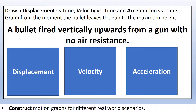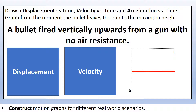Our first scenario is a gun firing a bullet vertically upwards with no air resistance. I always start by thinking about the acceleration of the object. There's only one force acting on the bullet — gravity — and that force doesn't change, so the acceleration doesn't change either.